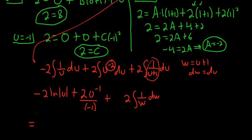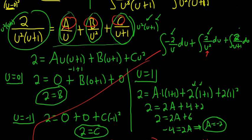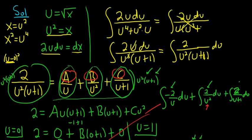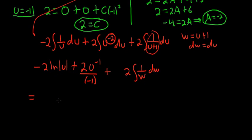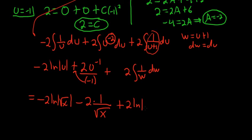All right, this is equal to, I forgot what u was. I think that was the square root of x at the very beginning of this monstrous problem. Yes, it was. So u is equal to the square root of x. This is negative 2 ln, absolute value, square root of x. Minus, right, that negative can come up, 2 times 1 over u. So 1 over the square root of x plus 2, natural log, absolute value of w. w is u plus 1, but u is the square root of x. The square root of x plus 1 and then plus C.